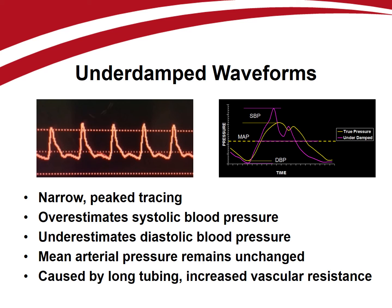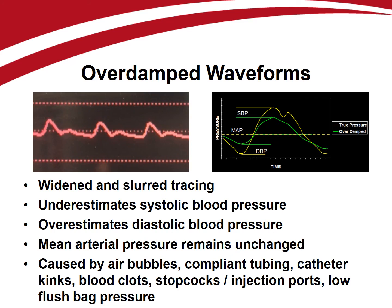In an underdamped waveform, additional harmonics are present, causing a narrow, peaked tracing that overestimates systolic and underestimates diastolic blood pressure. Mean arterial pressure measurements are least affected by underdamping and more accurately reflect the patient's true blood pressure. This is why mean arterial pressure should always be used to guide resuscitative therapy. Underdamping is caused by excessive lengths of pressure tubing greater than four feet and increased vascular resistance.